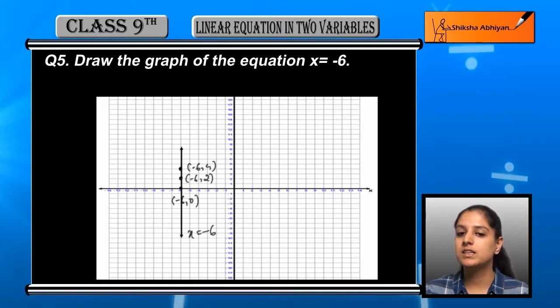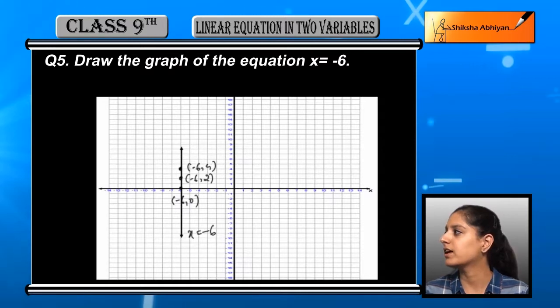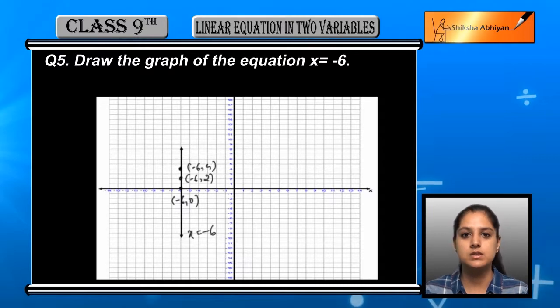We joined it with a straight line and this is an equation of a line which is parallel to the y-axis. So x is equal to minus 6, this is its graphical representation.